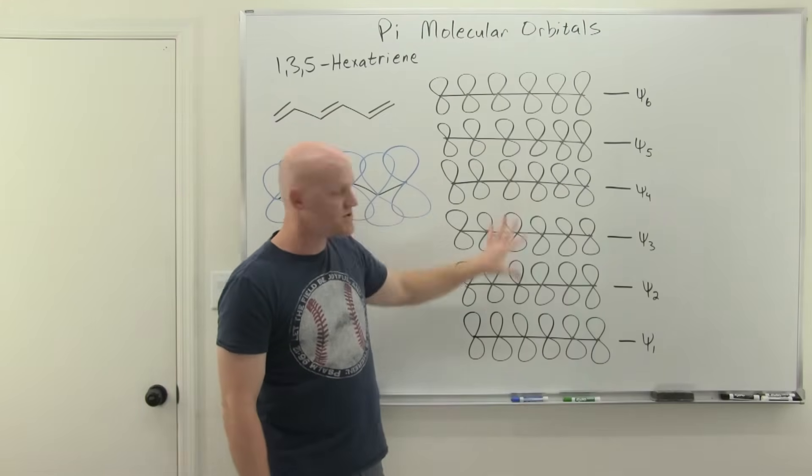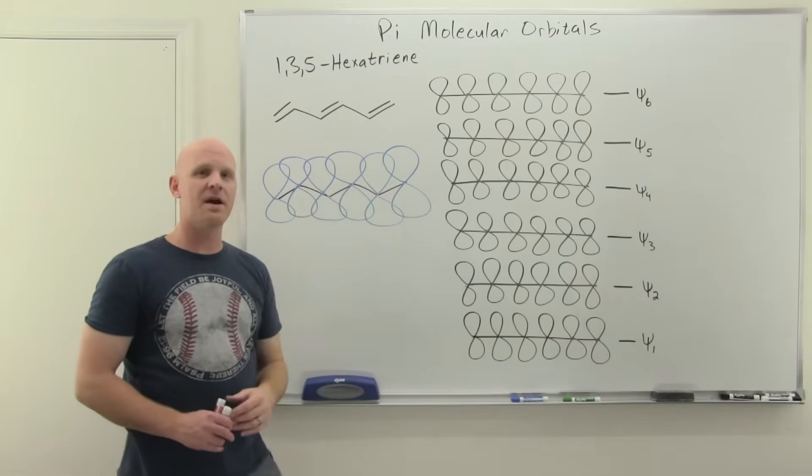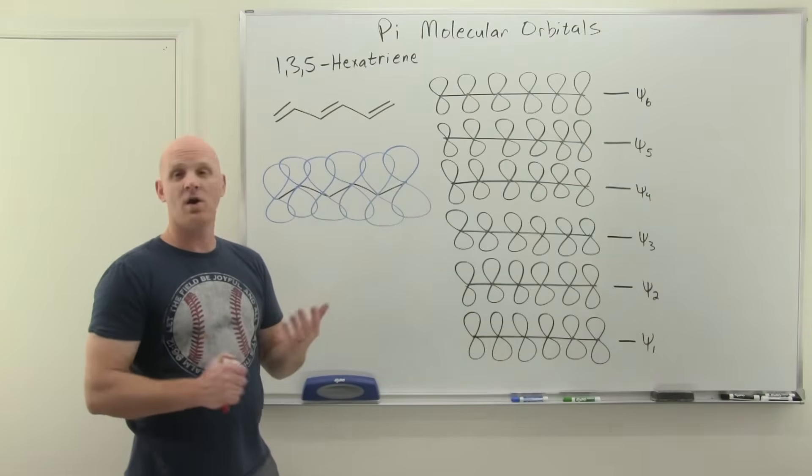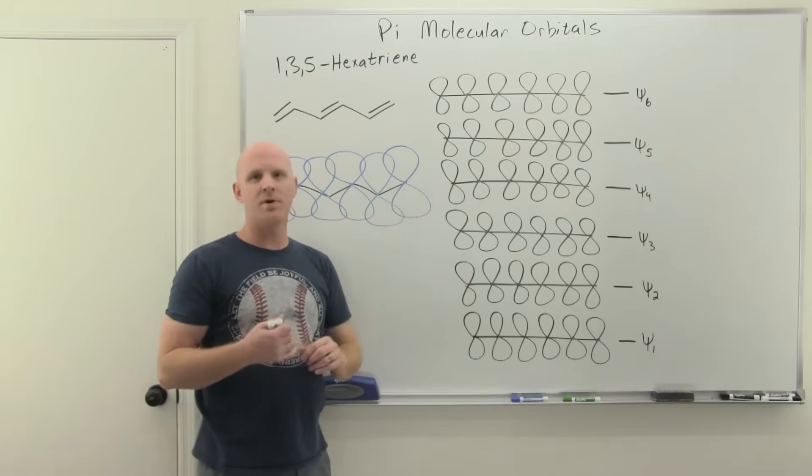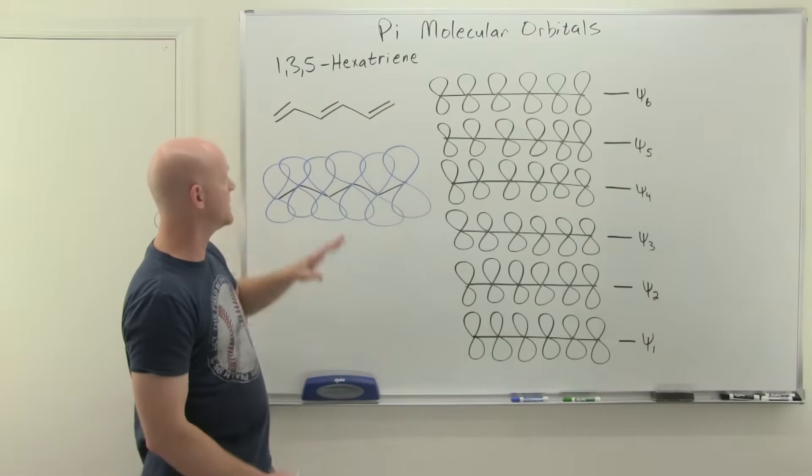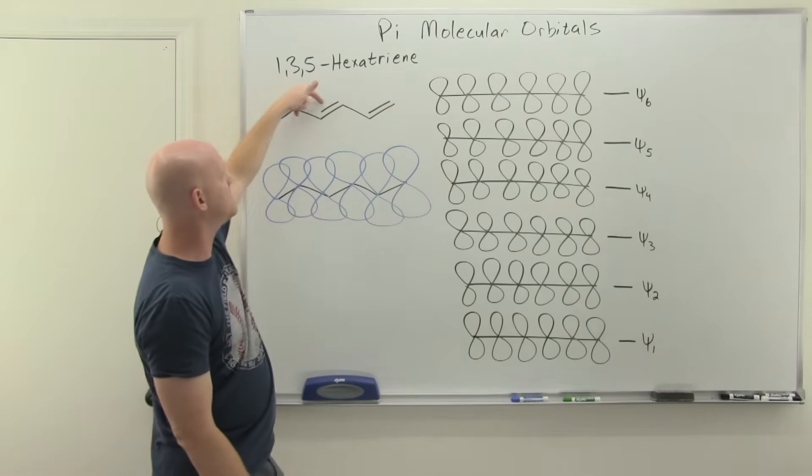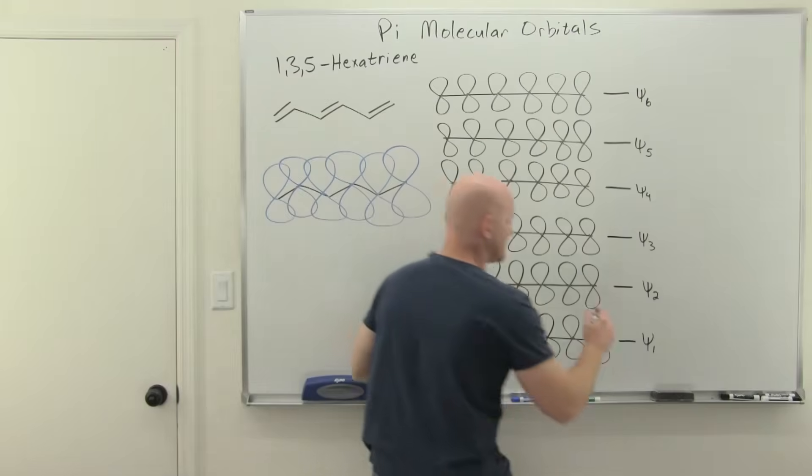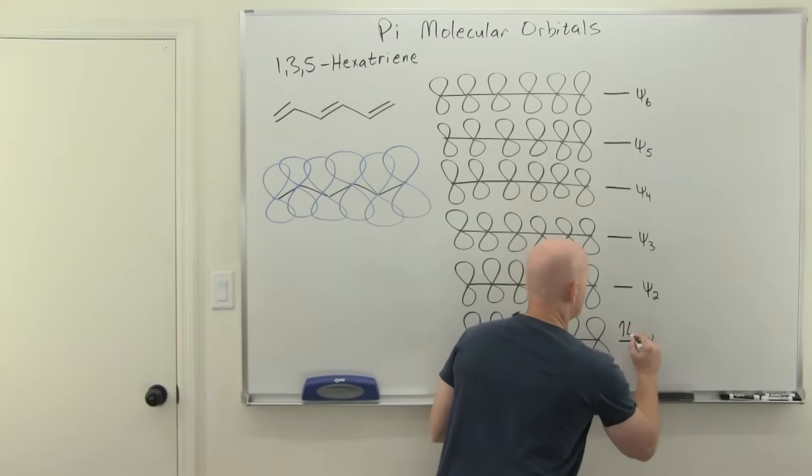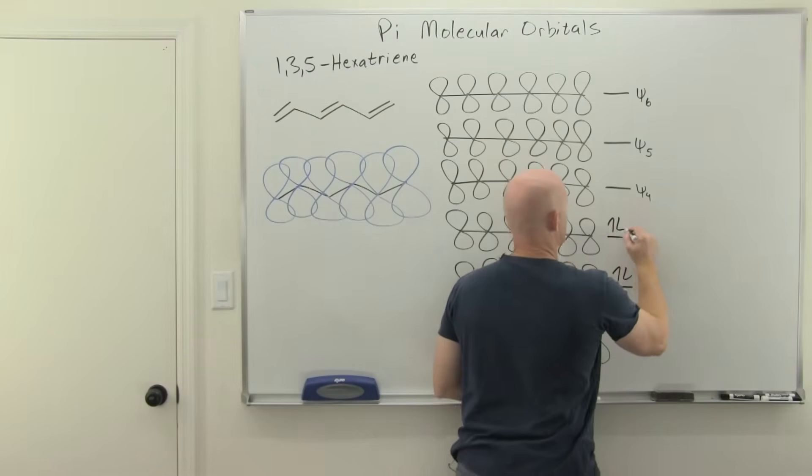So before we actually show the diagram, which will be a little bit more of a pain in the butt than the ones we've seen, we can already fill in the electrons, identify the HOMO, the LUMO, things of that sort. So with 1,3,5-hexatriene, we've got two, four, six pi electrons. So we'll fill in psi 1, psi 2, and psi 3.